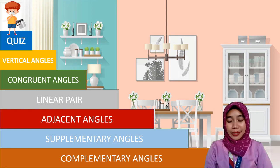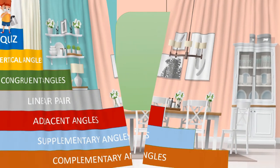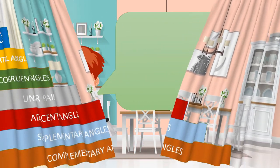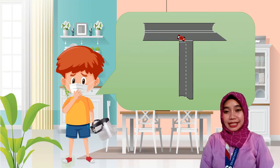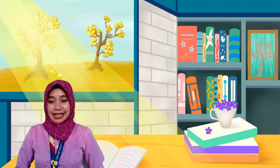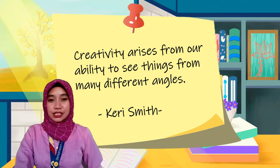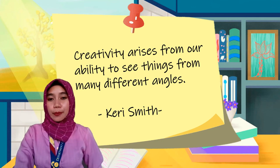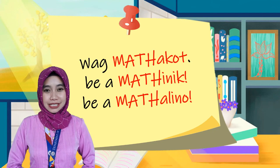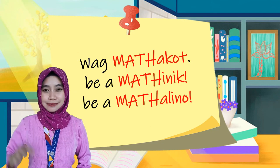We made it all the way to the top! Where can we find angle pairs in our surroundings? We find them in the hands of a clock, scissors, and in a road. This has been your teacher-broadcaster for today, Ms. Citi Naima Andani, giving you a quotation from Carrie Smith: 'Creativity arises from our ability to see things from many different angles.' Huwag matakot, higay makinig, and matalino. Bye-bye!